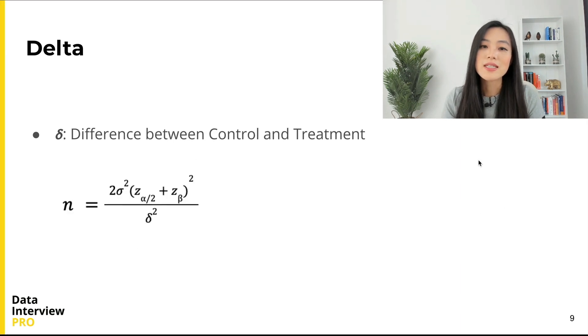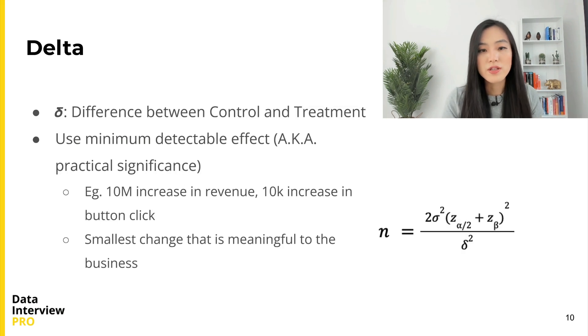Finally, let's take a look at δ, the difference between control and the treatment. How do we know δ before running the test? That's the reason to run the test to begin with, right? To know the difference between control and treatment.